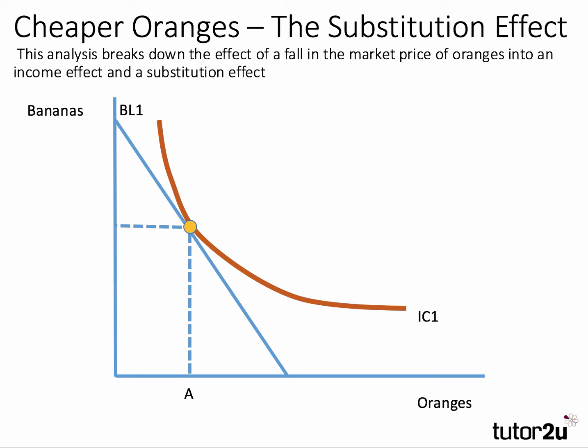The initial equilibrium choice is the point of tangency between budget line BL1 and indifference curve IC1. We're only going to focus on the quantity of oranges consumed, so we can leave the banana axis for now. We're going to assume the price of oranges halves, so that with a given income the consumer can now buy more oranges — their consumption set has increased. The budget line pivots outward from BL1 to BL2.